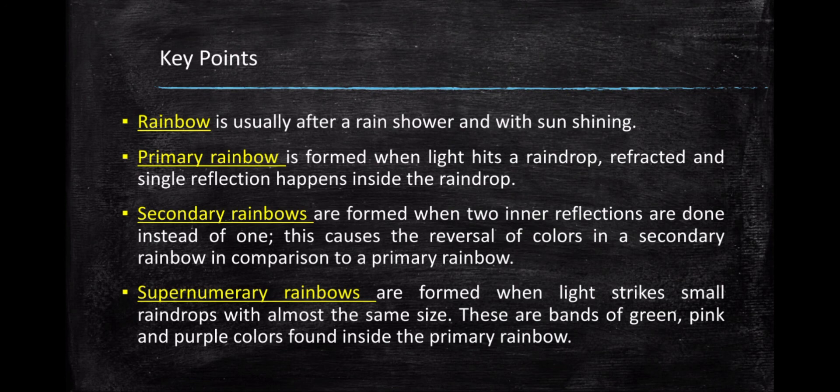Rainbow is usually seen after a rain shower and with sun shining. Primary rainbow is formed when light hits a raindrop, refracted and a single reflection happens inside the raindrop. Secondary rainbows are formed when two inner reflections are done instead of one. This causes the reversal of colors in the secondary rainbow in comparison to a primary rainbow. Supernumerary rainbows are formed when light strikes small raindrops with almost the same size. These are bands of green, pink, and purple color found inside the primary rainbow. And that's all for the discussion.